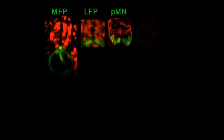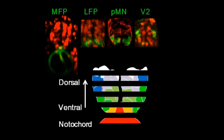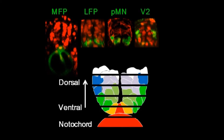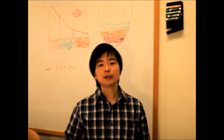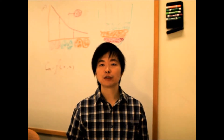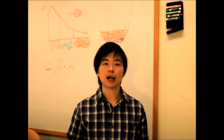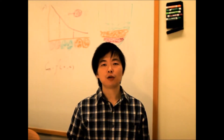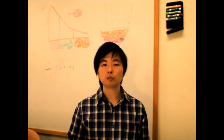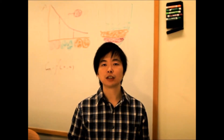Different neuron progenitors expressing different genes are arranged in an orderly fashion. From the cross-sectional view, they look like stripes on top of each other along the dorsal-ventral axis. This pattern prescribes the locations of different neuron types as well as the circuits that they form, which are crucial for the normal function of the nervous system.